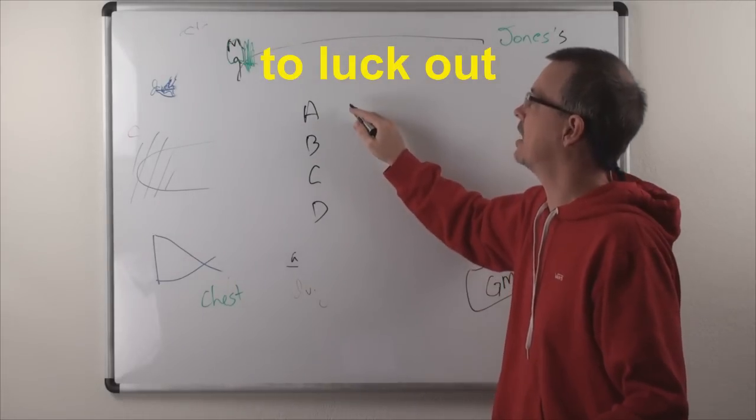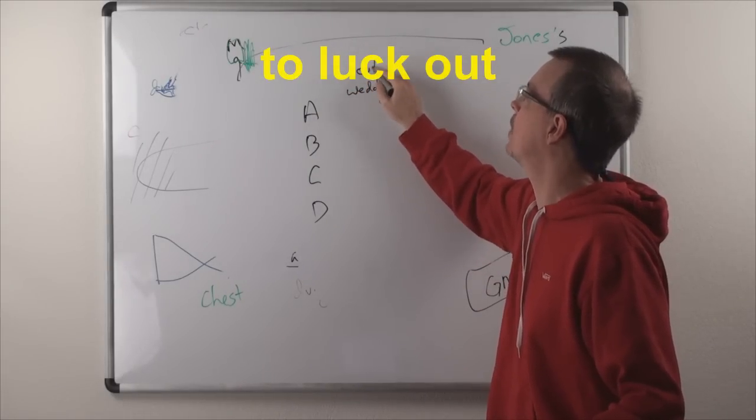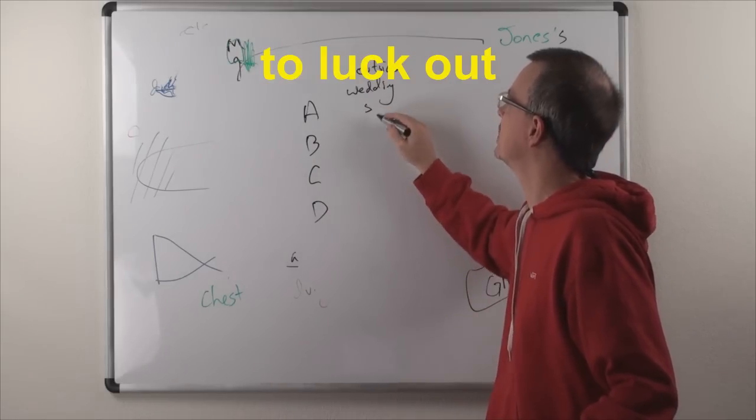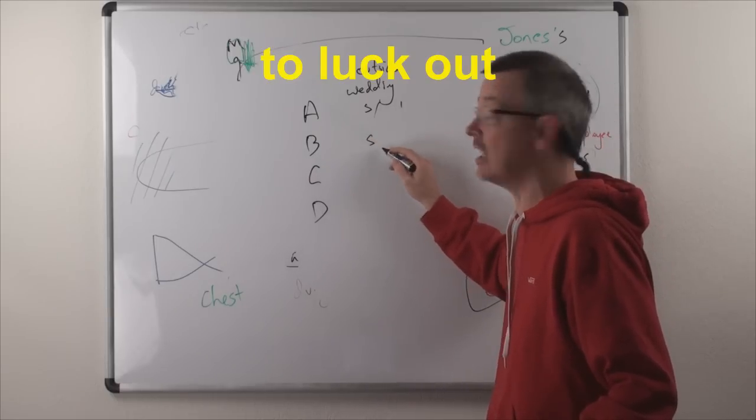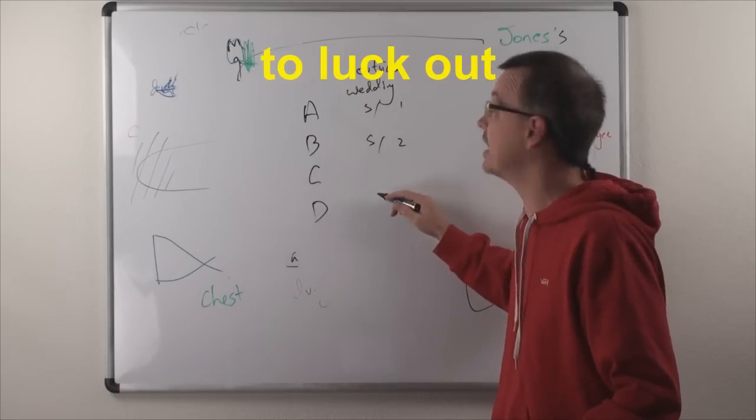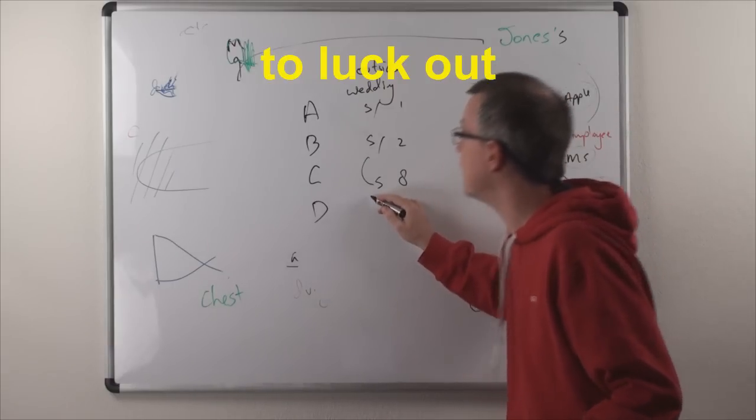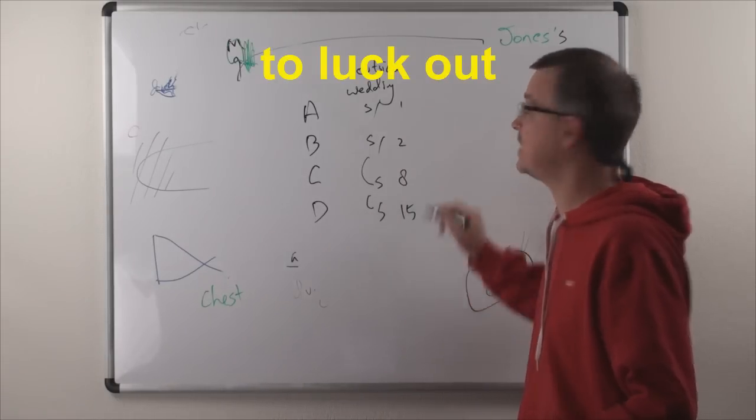So friend A has a wedding, and the wedding is an outside wedding. And his wedding is going to be this Saturday, Saturday the first. And the other friend is going to get married on Sunday the second. And then this friend is going to get married the next Saturday, the eighth. And then you're going to get married the next Saturday, the 15th.